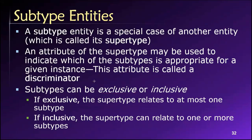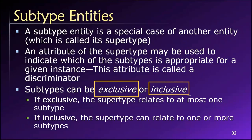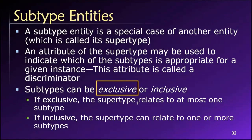One additional thing: subtypes can be either exclusive or inclusive. The difference is simply how many subtypes a supertype is allowed to be simultaneously. For example, if a university is run such that staff members cannot also be students — you must either be an employee or a student — then it would be an exclusive supertype-subtype relationship, because each person can only be one subtype at any given time.